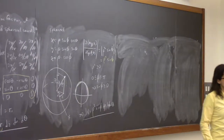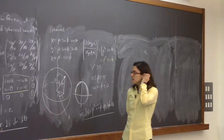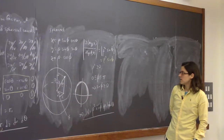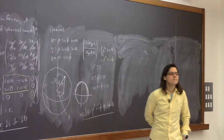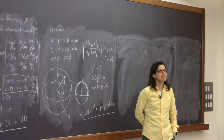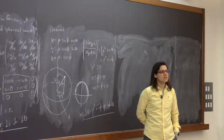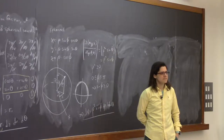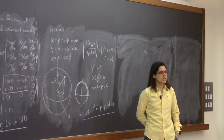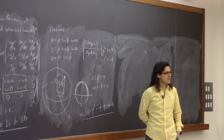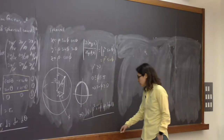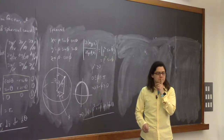A student asks: why is the Jacobian expansion factor not dependent on θ? It seems like if it depends on φ, it should also depend on θ. The instructor cannot think of the geometric reason off the top of their head and asks the class. This is a good question — the answer is that the Jacobian depends on φ but not θ — and we'll think about it and get back.